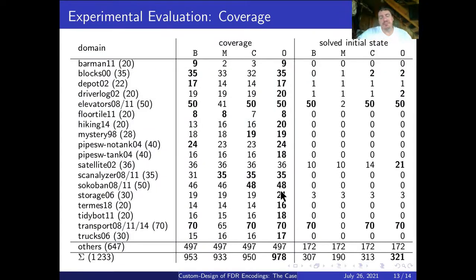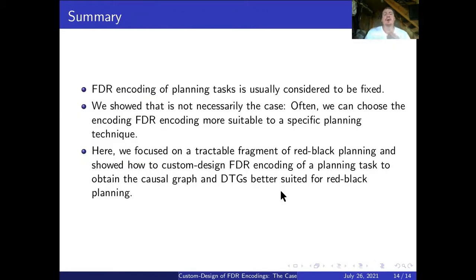Here is the comparison of the coverage and we can see again that first of all the encoding of planning task matters. We are getting different results for different encodings. And you can see that if we knew how to select the best possible encoding, we'd be able to increase the coverage significantly. So we are hoping that this will motivate research in what makes the FDR encoding better or worse for planning. To summarize, FDR encoding of planning tasks is usually considered to be fixed, but there can be different FDR encodings that are more suitable for some particular planning techniques. We focused in this paper specifically on red-black planning and showed that the performance of the planner can be improved by choosing different FDR encoding of the plan. Thank you for attention.